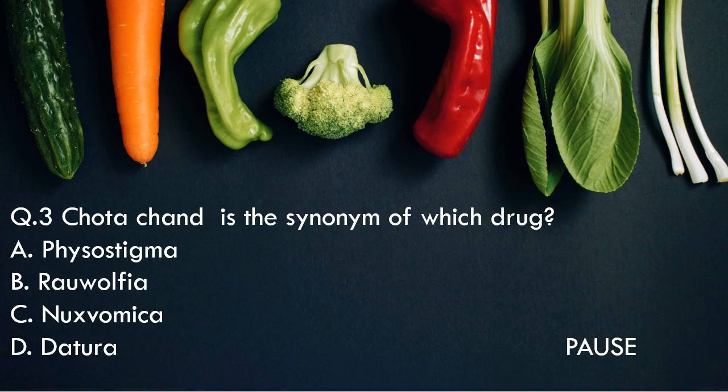Question 3: Chhota Achat is the synonym of which drug? Option A, Physostigma. Option B, Rauwolfia. Option C, Nux Vomica. And option D, Datura. And the right answer is option B, Rauwolfia. So Chhota Chant is the synonym of Rauwolfia.